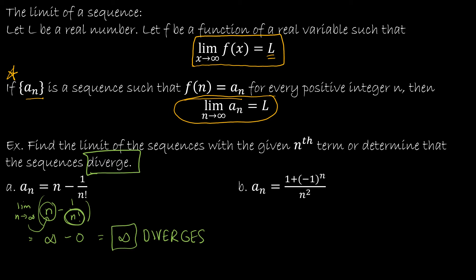So the only time we're going to have a convergent sequence is when the limit actually exists, and we know that if we get a limit of infinity, that really means the limit doesn't exist. So let's take a look at the second example. In the second example, I'm going to be thinking about the limit as n approaches infinity of 1 plus negative 1 to the n, over n squared.